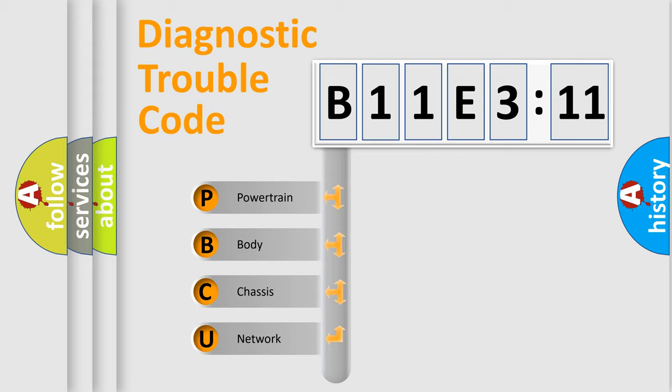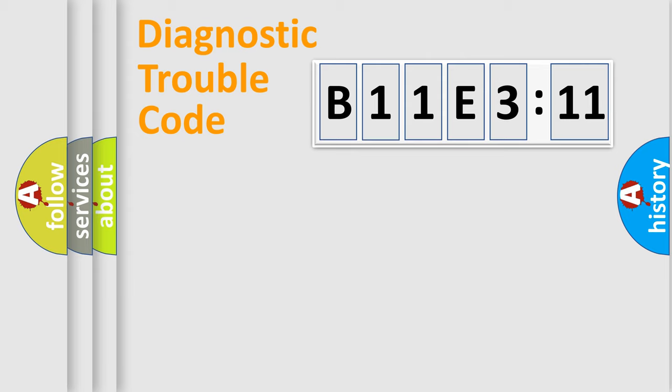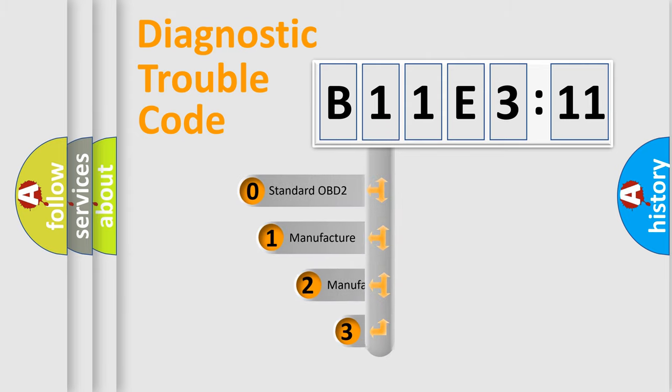We divide the electric system of automobile into four basic units: Powertrain, Body, Chassis, and Network. This distribution is defined in the first character code.